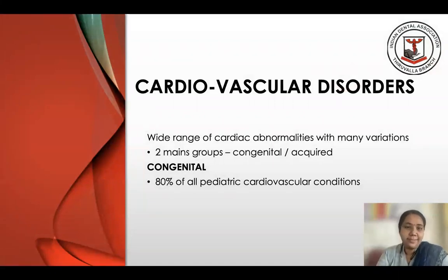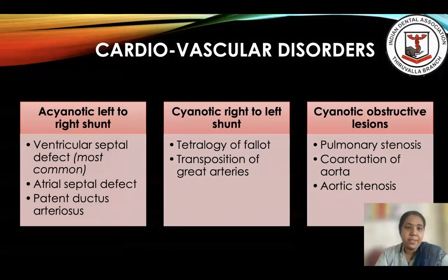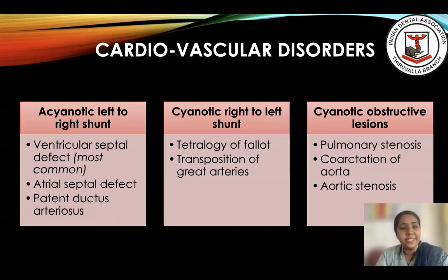The vast majority of cardiovascular disorders seen in children could be congenital or acquired, and 80% of these are congenital. Congenital cardiac disorders may be broadly classified into two types: one is when there is going to be a shunt, and the other which are obstructive lesions.